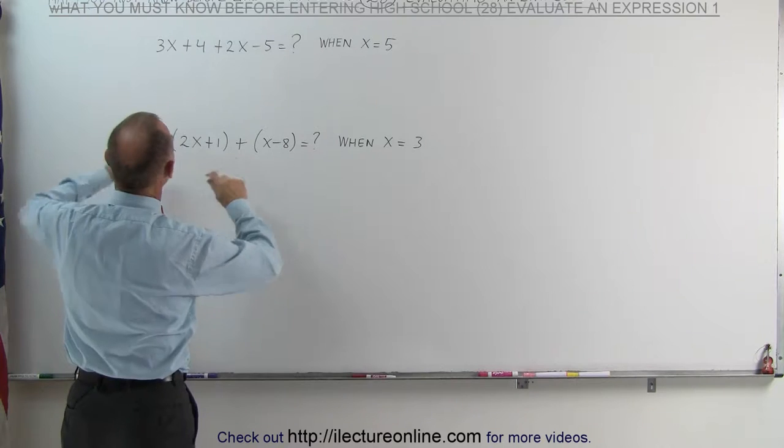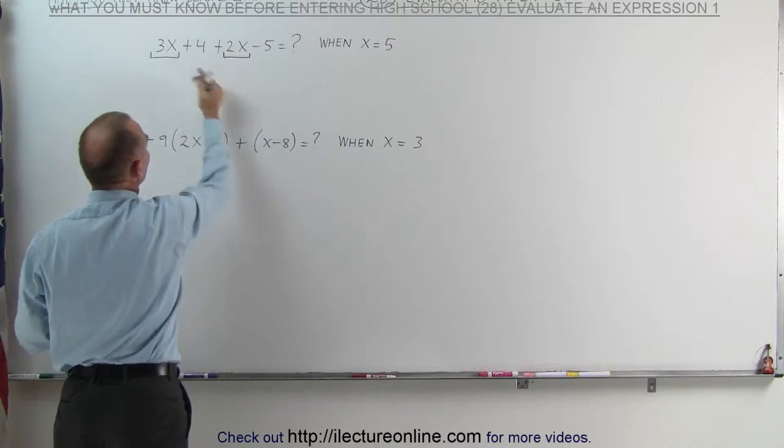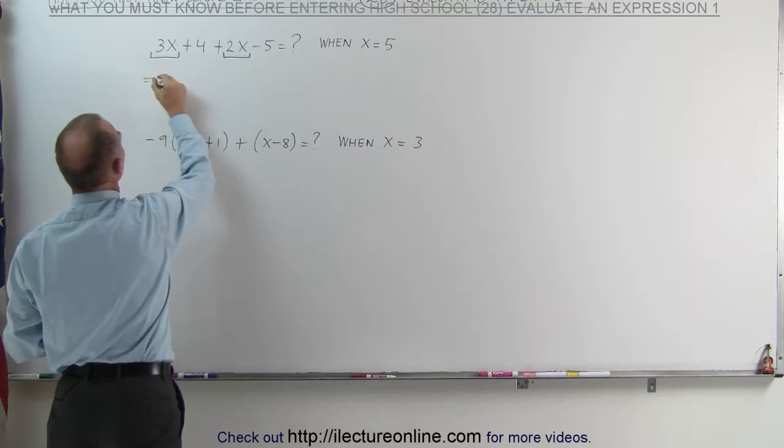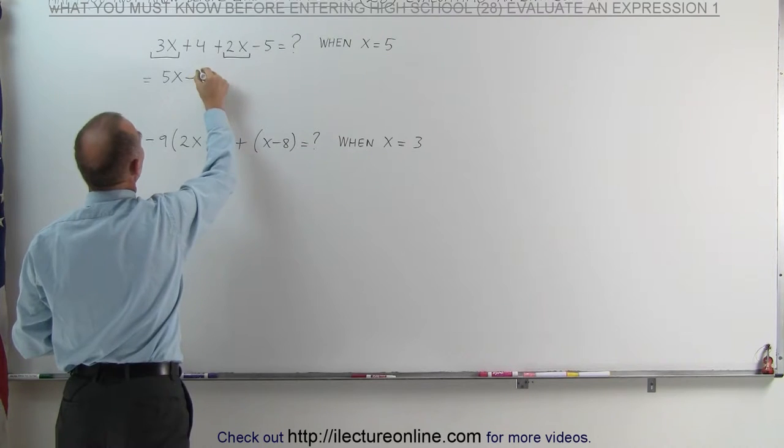So in the first example, we can see that we have a 3x and a 2x. Those are two like terms. We can add those together. This is equal to 5x and then 4 minus 5 is minus 1.